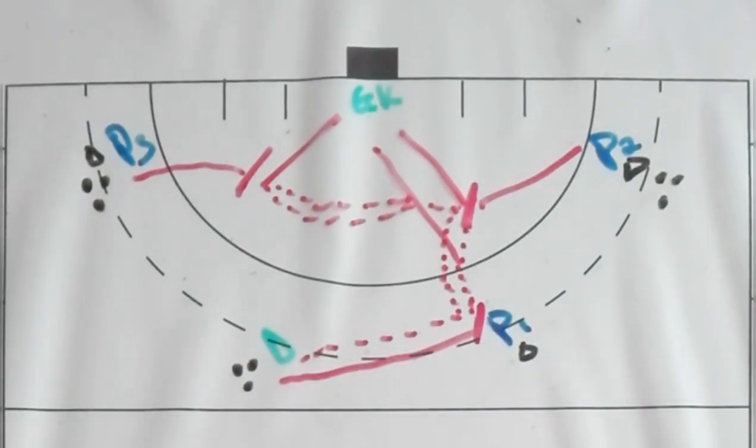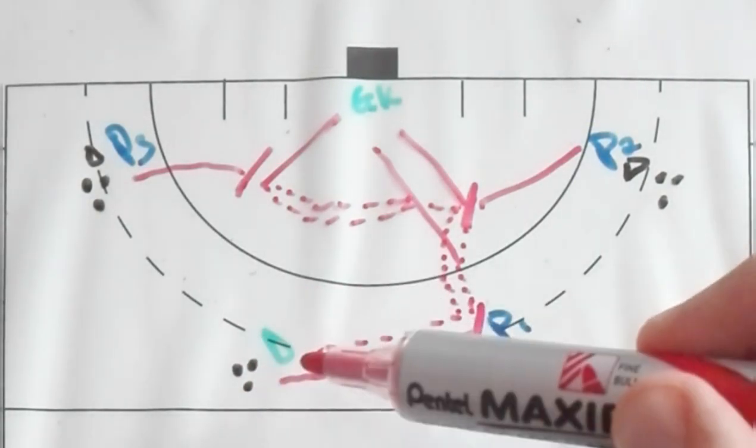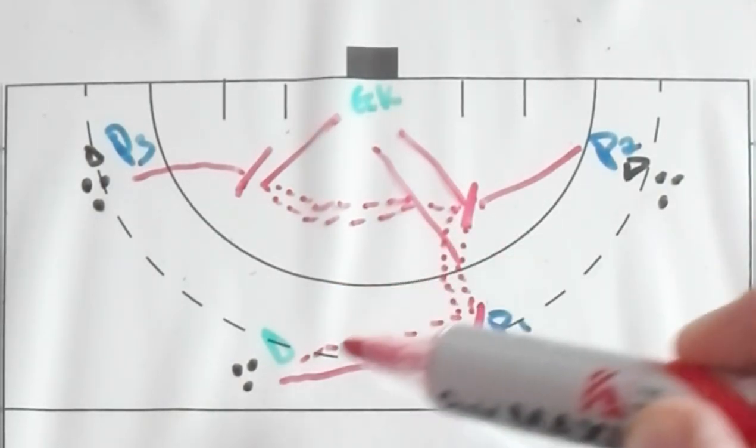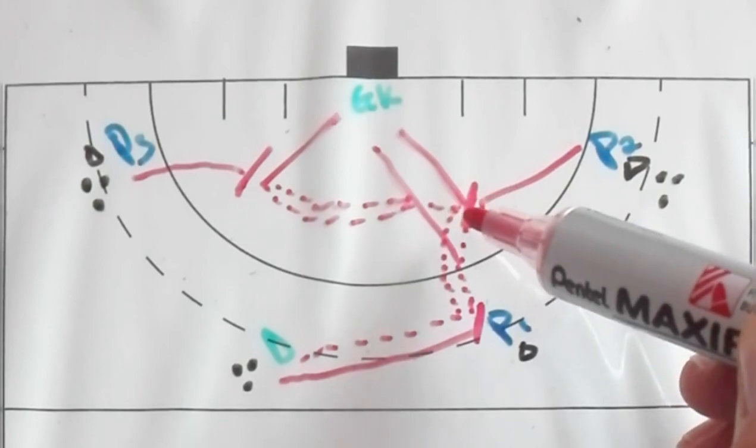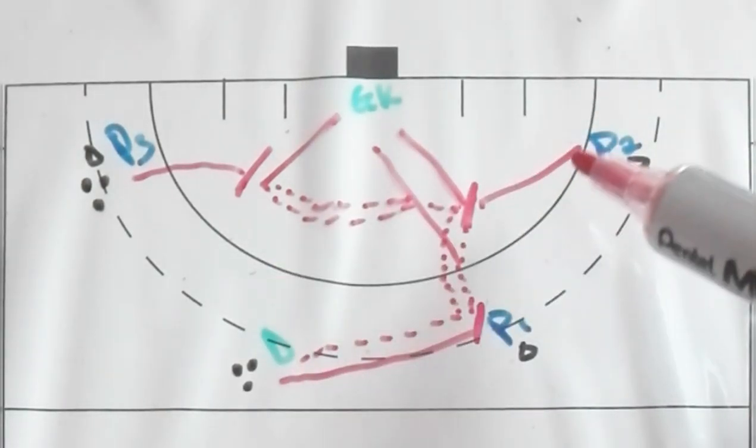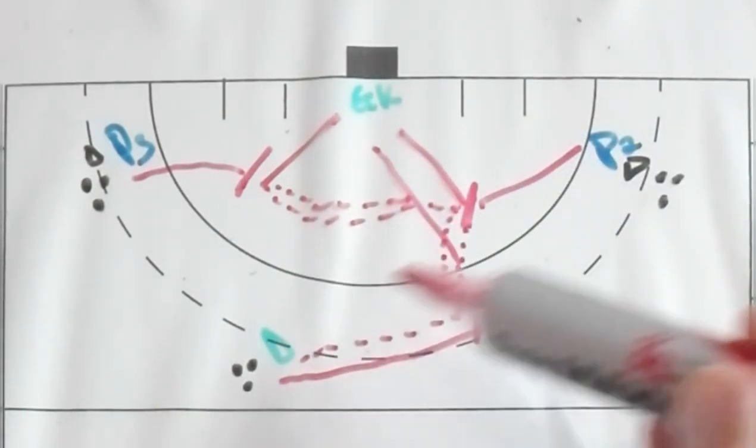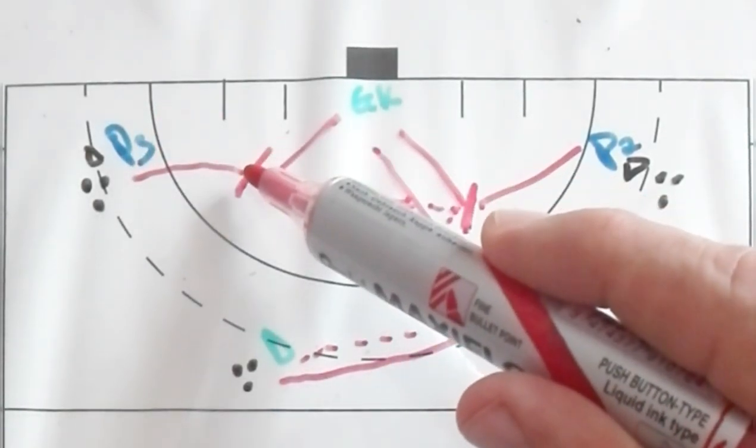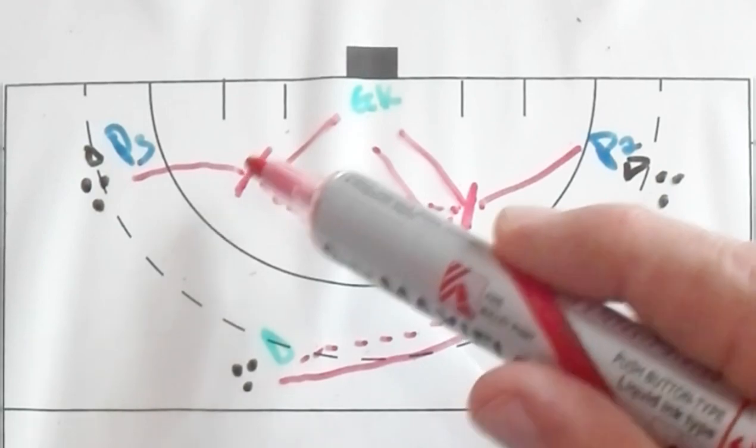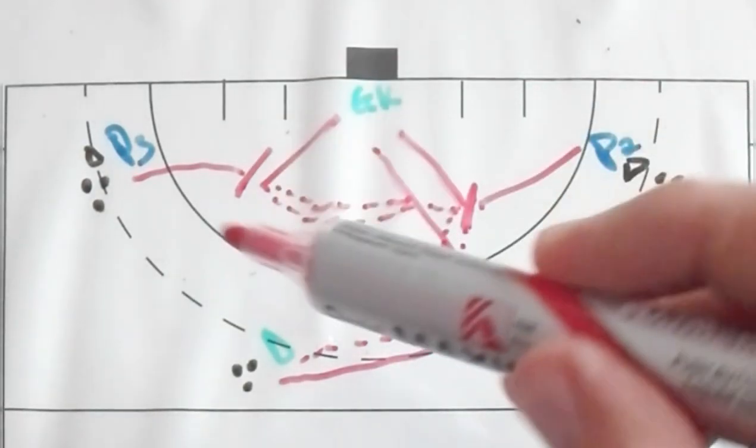And then you can progress it after that as well where it's actually two defenders. So as soon as player one takes a shot, this ball comes in from player two, it's a 2v1. As soon as this 2v1 is done, the next defender enters, and then player three will pass the ball into the circle for player one. So then it's three attackers versus two.